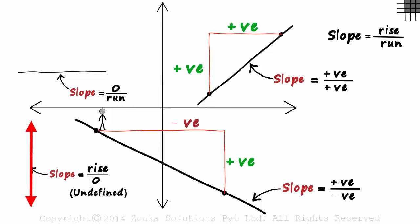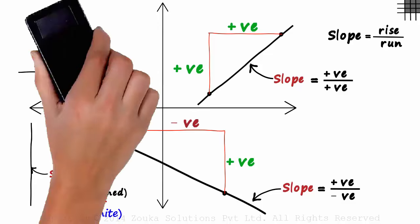The slope of a line parallel to the y axis is undefined or as some say is infinite. Now if you have understood the concept of signs, finding the slope is very easy. So let's move on to finding the slope of a line.